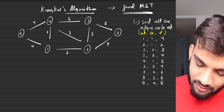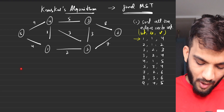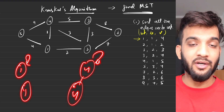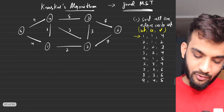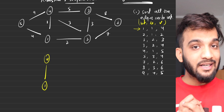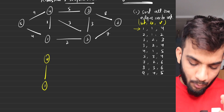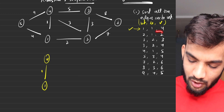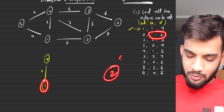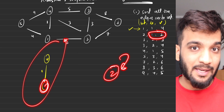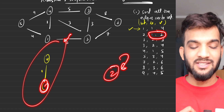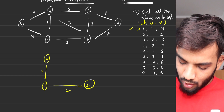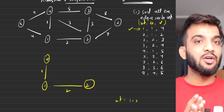Take the first edge: one, four. Find the ultimate parent of one — it's one. Find the ultimate parent of four — it's four. They do not belong to the same component, so we take this edge into our MST because it's the most minimal edge. Next is one, two. Two's parent is itself and one is in this component. They do not belong to the same component, so one comma two is also added to the MST. We can keep counting the weight: one plus two so far.